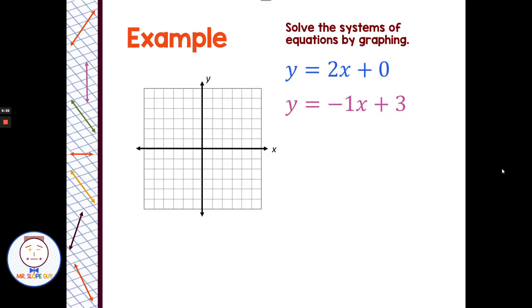An example of a problem would look like: solve the system of equations by graphing for y equals 2x plus 0, and y equals negative x plus 3.